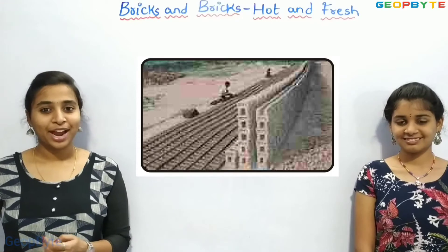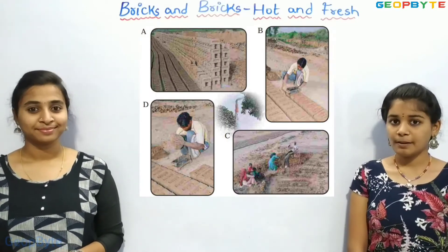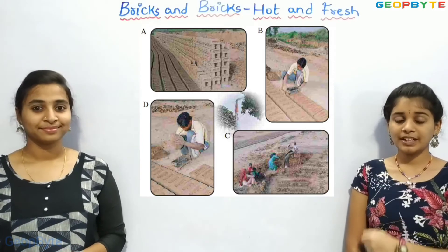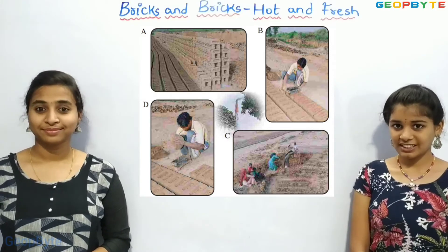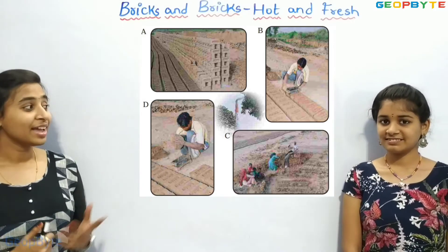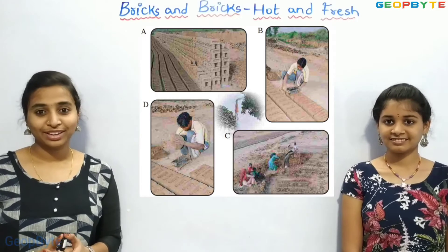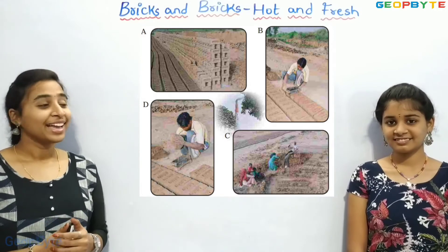Children, Ganesh and Sahiba love to look at the pattern of bricks in long, long lines. Here are 4 pictures from Brickkiln. These pictures are jumbled up. Look at these pictures and write the correct order. The correct order will be C, D, B, and A.